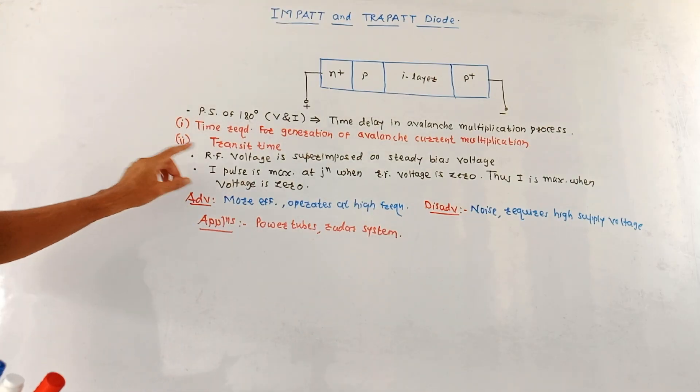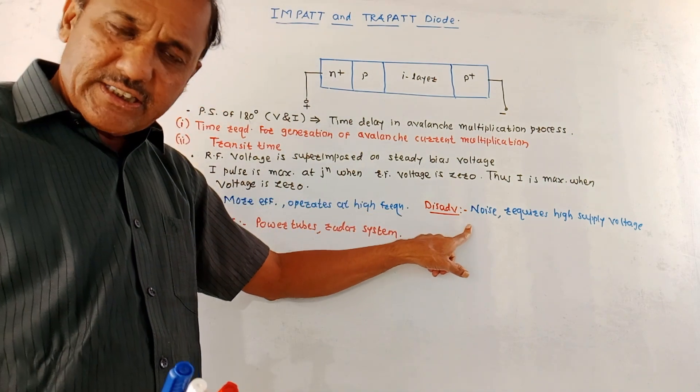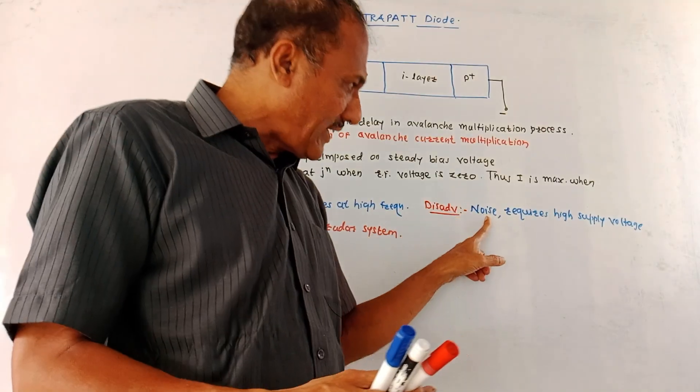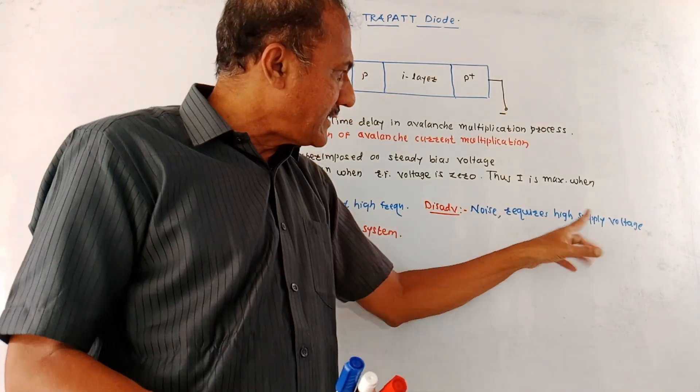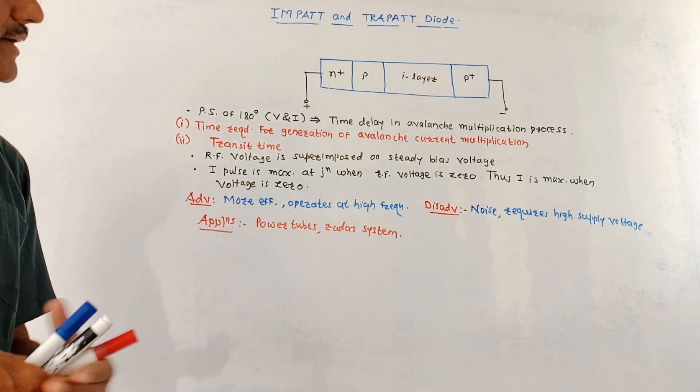Now advantages include its efficiency is more compared to the Gunn diode and it operates at very high frequencies. Its major disadvantages are it produces a noise signal and requires high supply voltage. Applications include the power tube and radar system.